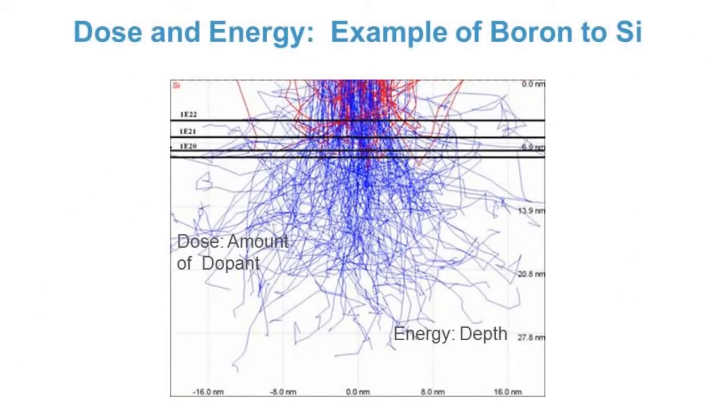An ion implant process is at a high level defined by two things, dose and energy. Dose is the amount of dopant being implanted and energy will establish the effective depth of the dopant into the silicon.